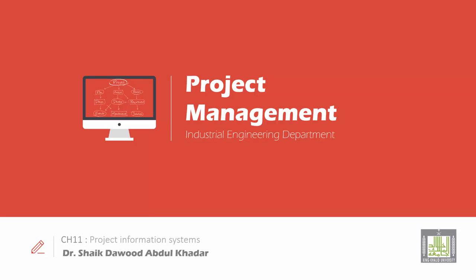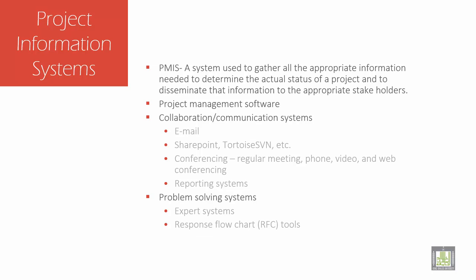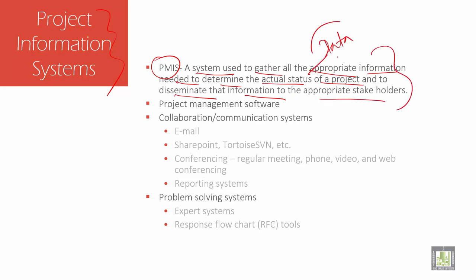We'll see the remaining slides. Project Information System, known as PMIS, is a system used to gather all the appropriate information needed to determine the actual status of the project, and to disseminate that information to the appropriate stakeholders. It gathers the data, finds the actual status of the project, and gives information to the stakeholders.